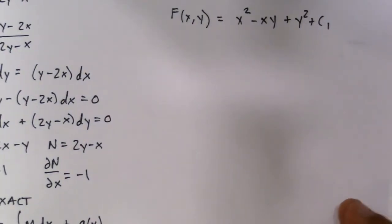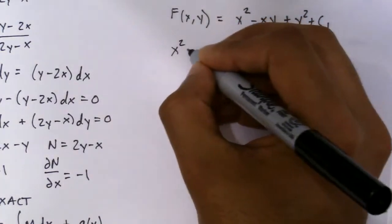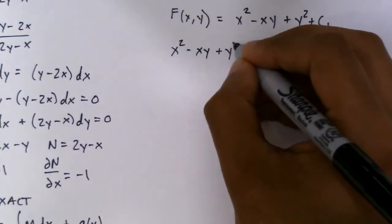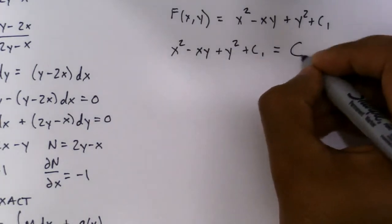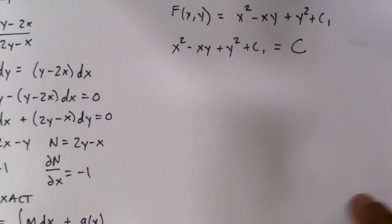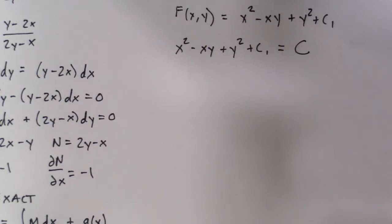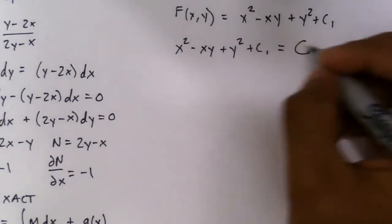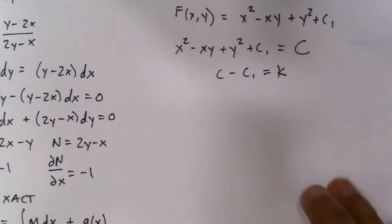Alright, now that's fine and dandy, but we need the general solution. And the general solution is simply doing this. You just get this part of the equation, x squared minus xy plus y squared plus c1, and equaling it to just a constant. That's why I chose c1. It's different from c. So if you realize this, c1 plus c is just another constant. So I'm going to let, or rather minusing, so I'm going to say c minus c1 equals a constant k, whatever, it doesn't matter.